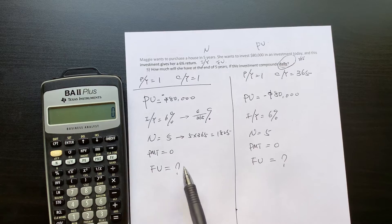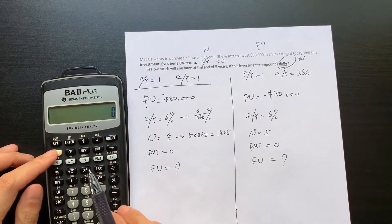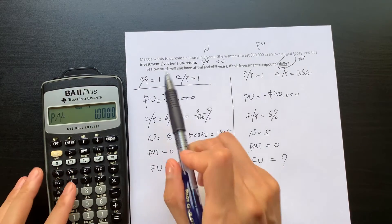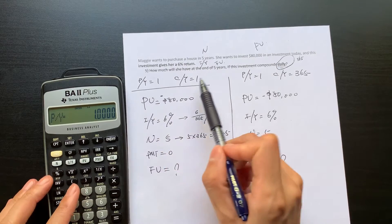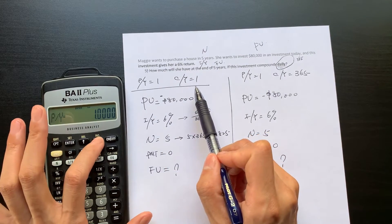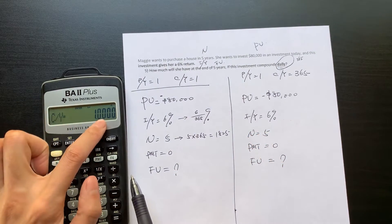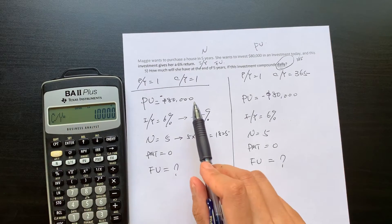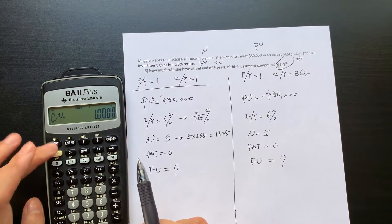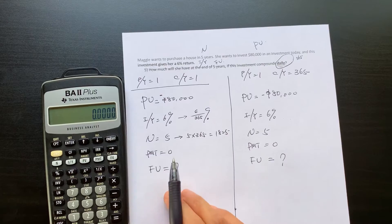The first way to do it, you make sure your financial calculator is PY equal to 1, CY equal to 1. So after you've done this, then you can input this number.